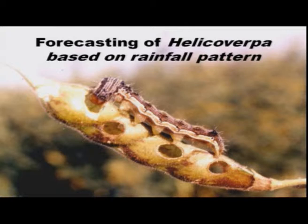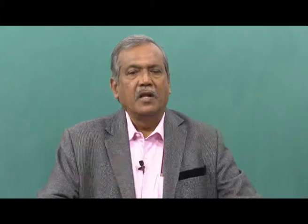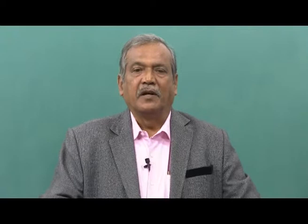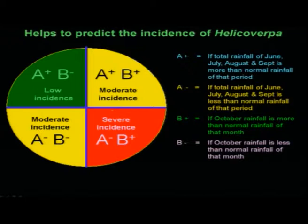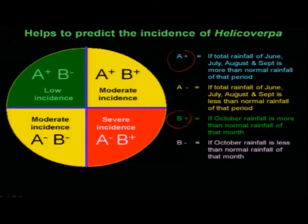For this particular insect, because of the coordination of various universities including University of Agricultural Sciences Raichur, ICRISAT located in Hyderabad, and the National Centre for Integrated Pest Management, we have developed a forecasting model using rainfall which is working very efficiently. You can see this graph which clearly indicates four quarters. This forecasting model has been developed using 30 years of rainfall data, making two situations.